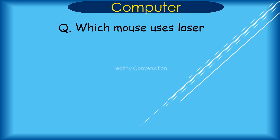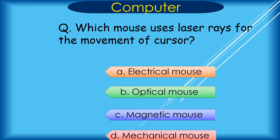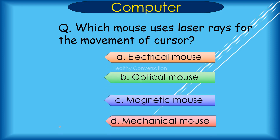Question: Which mouse uses laser rays for the movement of the cursor? A. Electrical mouse, B. Optical mouse, C. Magnetic mouse, D. Mechanical mouse. Correct answer is B. Optical mouse.